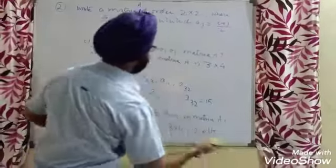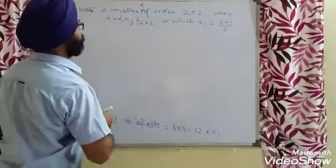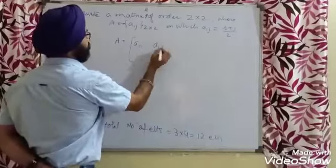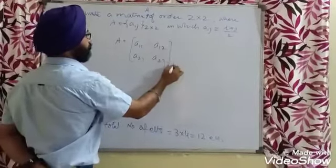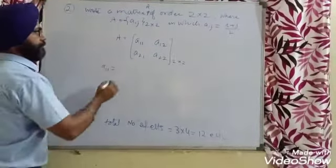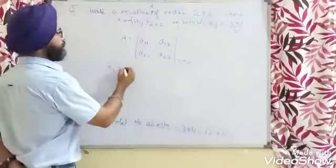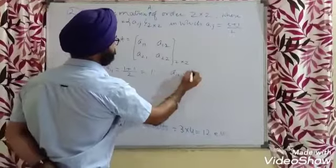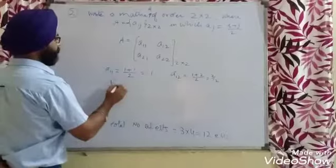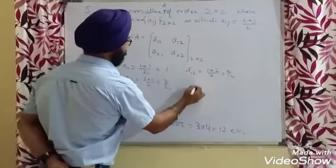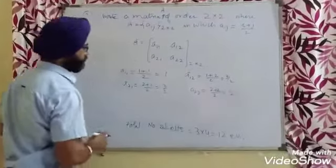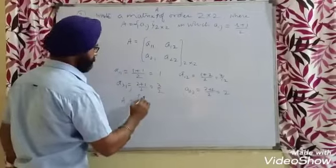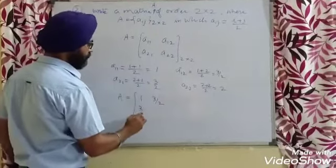For a 2 by 2 matrix, the required elements are A11, A12, A21, and A22. A11: I=1, J=1, so (1+1)/2 = 1. A12: I=1, J=2, so (1+2)/2 = 3/2. A21: I=2, J=1, so (2+1)/2 = 3/2. A22: I=2, J=2, so (2+2)/2 = 2. So matrix A is [1, 3/2; 3/2, 2], a 2 by 2 matrix.